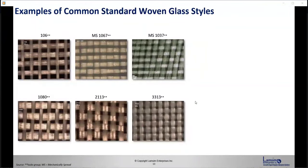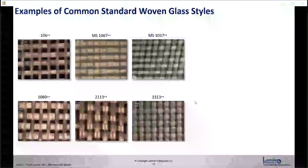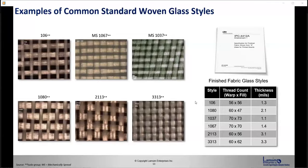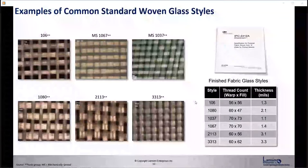Here are some examples of common standard woven glass styles from Isola. You can see the weave pattern is different for each glass style number, and each number is unique. They're documented in the IPC 4412A document — a useful document that describes each glass style cloth, the warp and fill dimensions, the weight, and many other things.